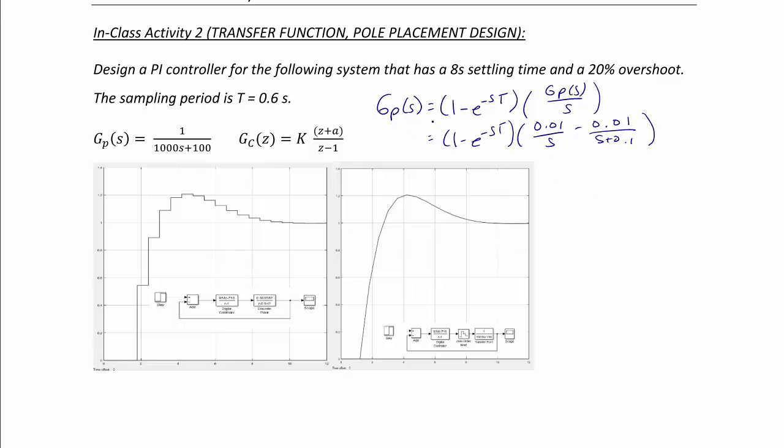So then we take the z-transform and we get that GP of s is equal to 1 minus z-inverse times the quantity 0.01 z over z minus 1 minus 0.01 z over z minus e to the negative 0.1t. And all of that simplifies to 0.01 minus 0.01 e to the negative 0.1t over z minus e to the negative 0.1t.